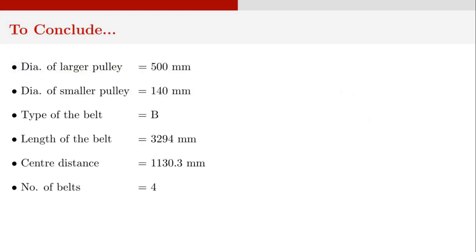To conclude: the diameter of the larger pulley is 500 millimeters, the diameter of the smaller pulley is 140 millimeters, the type of belt is B, the length of the belt is 3294 millimeters, the center-to-center distance is 1130.3 millimeters, and the number of belts required is 4. And that's all. Thank you.